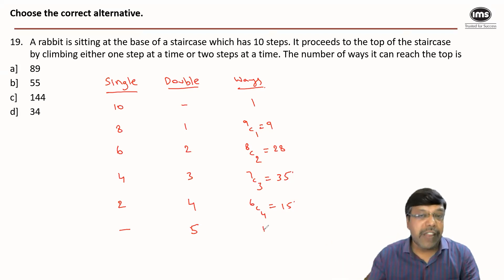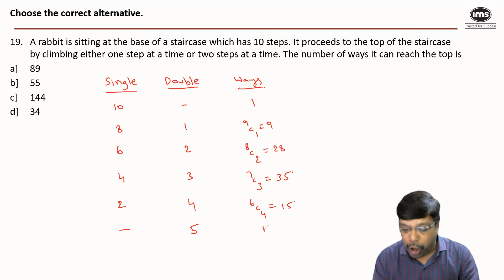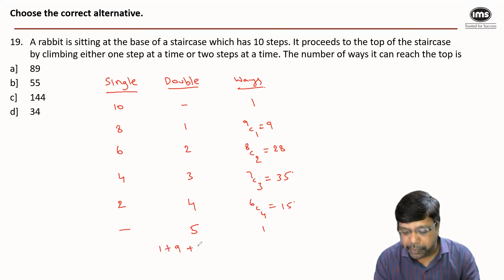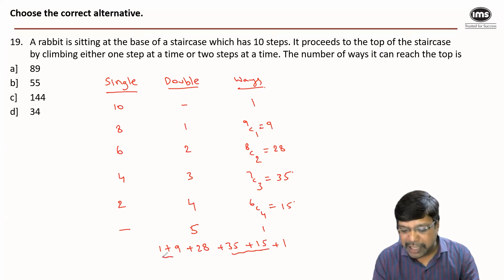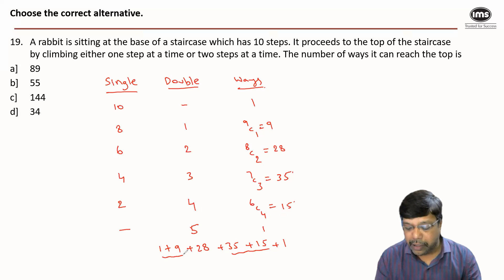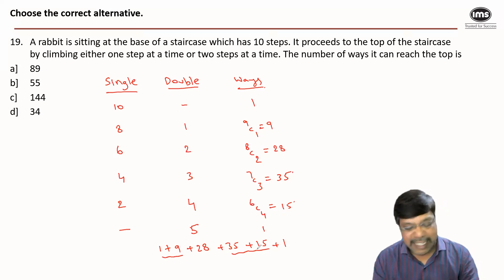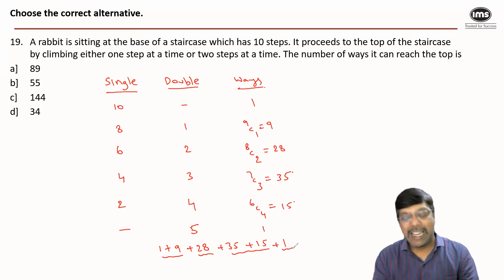The total number of ways to reach the top is 1 + 9 + 28 + 35 + 15 + 1. Calculating: 35 + 15 = 50, 1 + 9 = 10, 50 + 10 = 60, 60 + 28 = 88, 88 + 1 = 89. Answer option A.